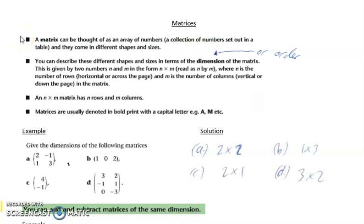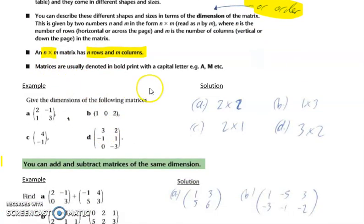In this video we're going to be looking at matrices, just an introduction to matrices. A matrix is an array of numbers or a collection of numbers set out in a table. They come in all different shapes and sizes. The dimensions or order of a matrix is given by the number of rows by the number of columns. An n by n matrix has n rows and n columns. A matrix is usually denoted by a capital letter, A, B, C, etc.